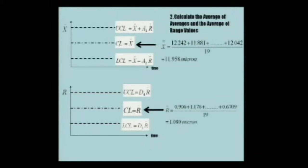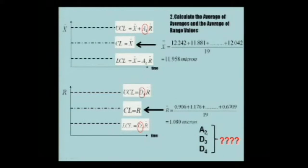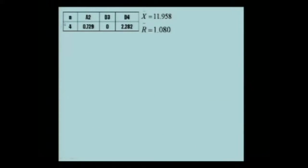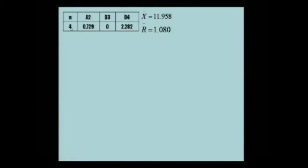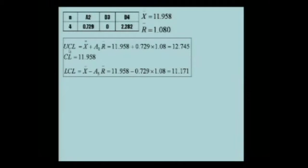We found the center lines of both charts. Now we need the constants A2, D4, and D3 from the table, which gives us these values according to the sample size. Since the sample size is 4, we get from the table the values of A2, D3, and D4. X double bar is 11.958, and A2 at N=4 is 0.729, times the average range of 1.08. That gives us the upper control limit. X-bar minus that same term gives us the lower control limit.